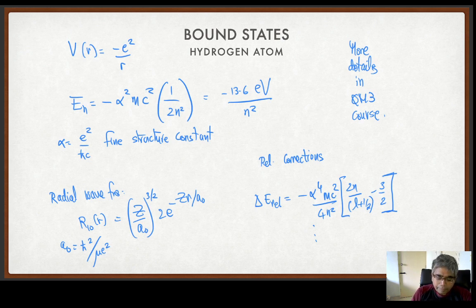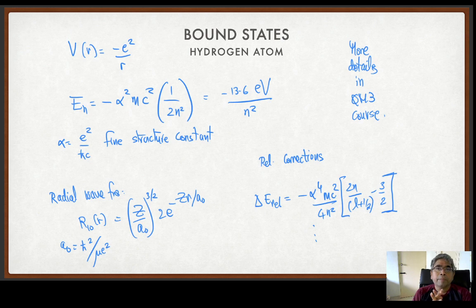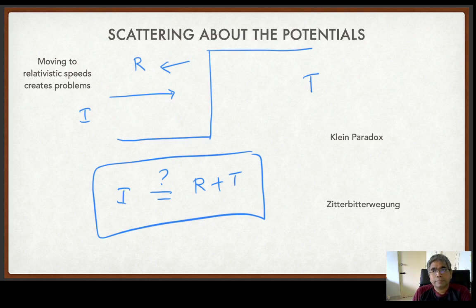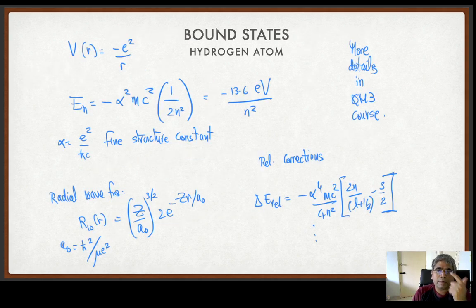The basic idea is that quantum mechanics works very well in the non-relativistic regime, but in the relativistic regime it is not the best picture, because quantum mechanics always treats only the wave functions and their momenta in a quantum mechanical manner, whereas interactions are not treated quantum mechanically — they are always treated classically.